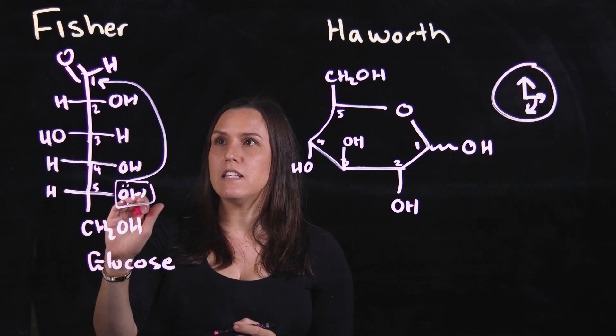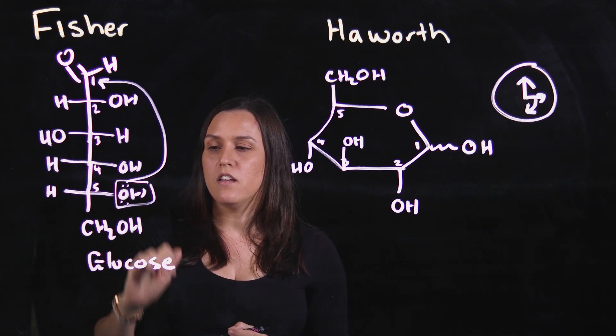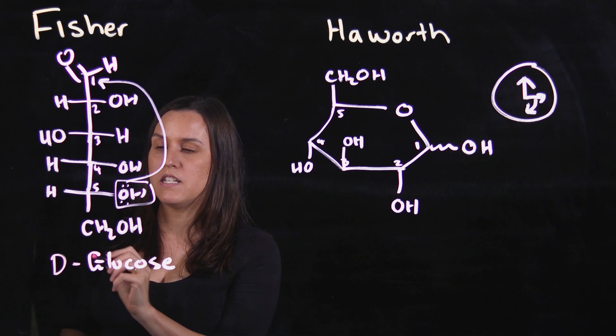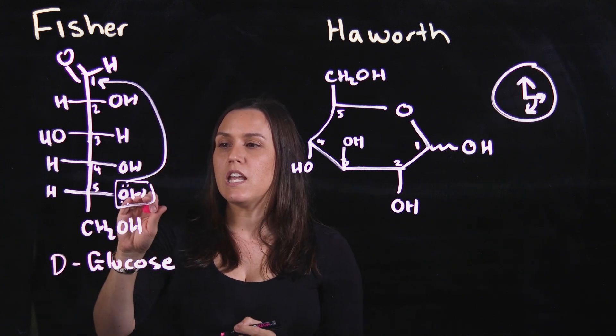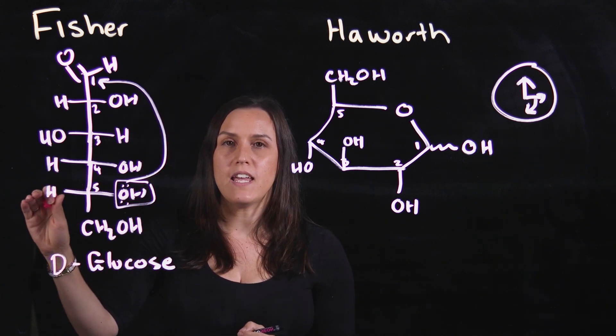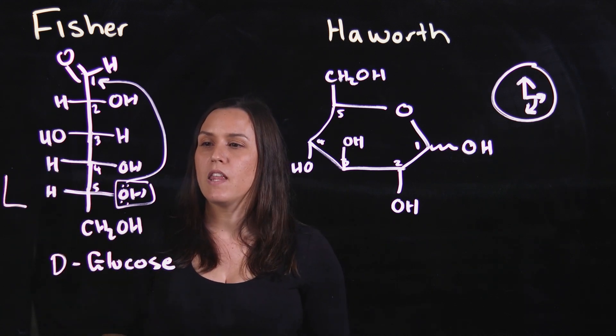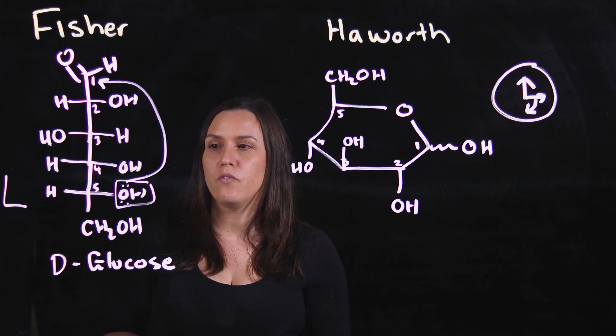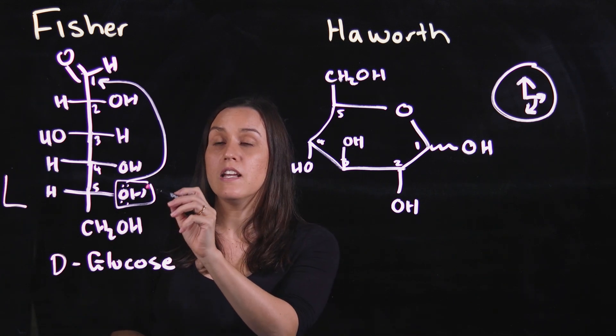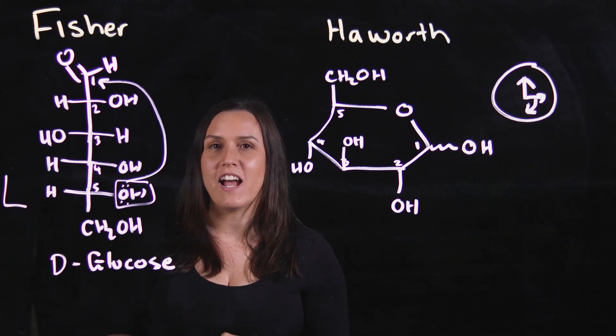Looking at that OH, it is on the right-hand side, so it is D. It's D-glucose. If this OH is on the left-hand side, it would be L. L is for left, and D is for right side.